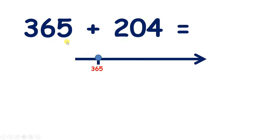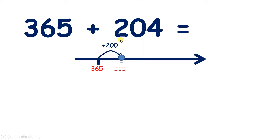We have 365 and we need to add 204, so we need to add two hundreds, we don't need to add any tens, and we need to add four units. So if we have three hundreds and we add two hundreds, that gives us five hundreds and we still have the 65 that we started with.